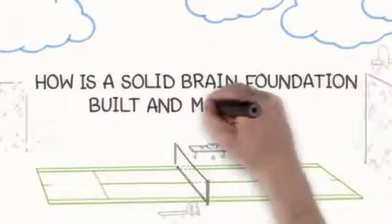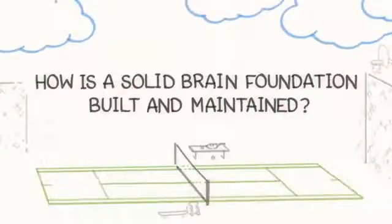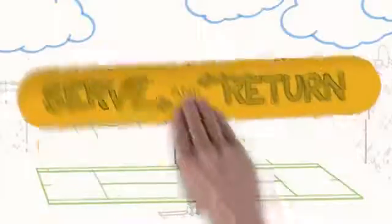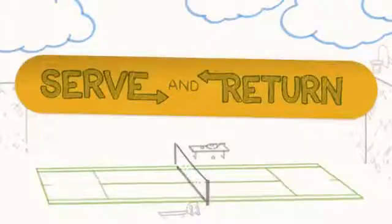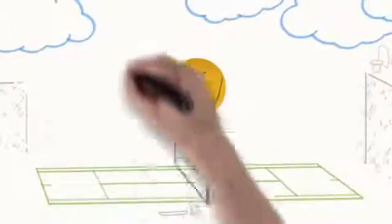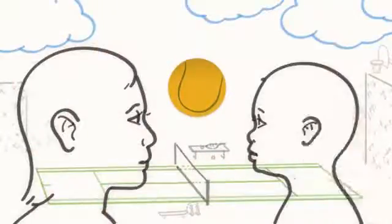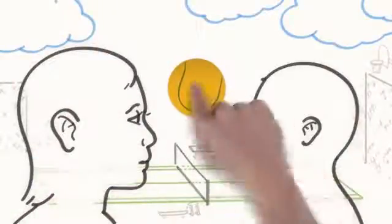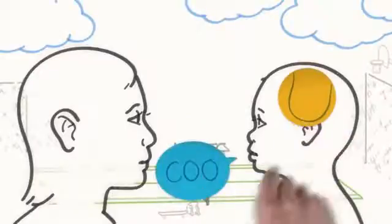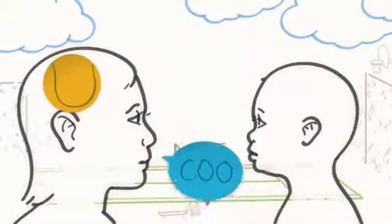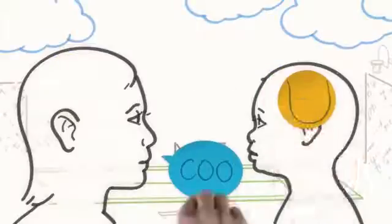So just how is a solid brain foundation built and maintained in a developing child? One way is through what brain experts call serve and return interactions. Imagine a tennis match between a caregiver and a child, but instead of hitting a ball back and forth across a net, various forms of communication pass between the two, from eye contact to touch, from singing to simple games like peek-a-boo.